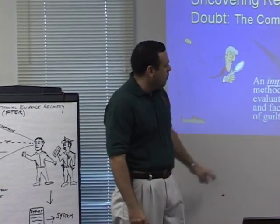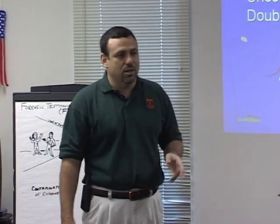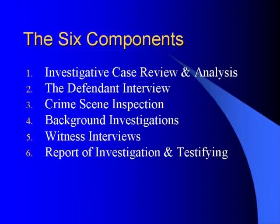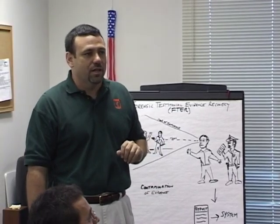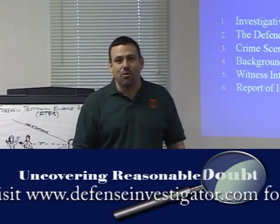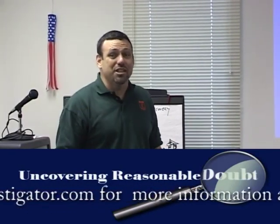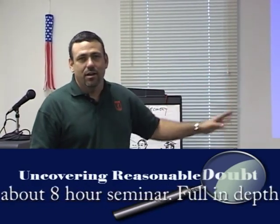Our job as criminal defense investigators is to conduct an investigation and uncover evidence that's going to support guilt or innocence. The six components are: investigative case review and analysis, defendant interview, crime scene inspection, background investigations, witness interviews, and report of investigation and testifying. Those are the six components in a specific order, placed in that specific order for strategic purposes. Strategy is everything in investigation. The six components are placed in this manner for optimal results.